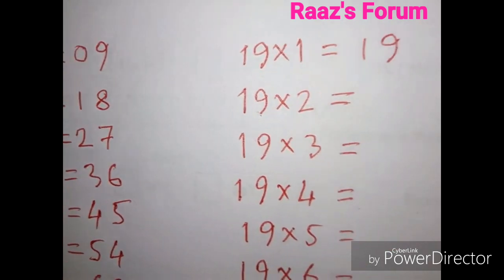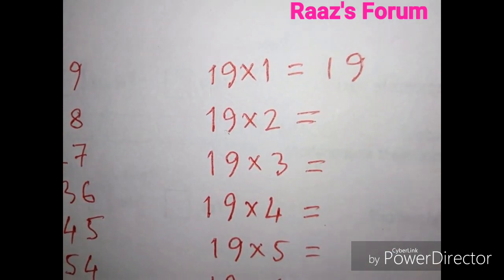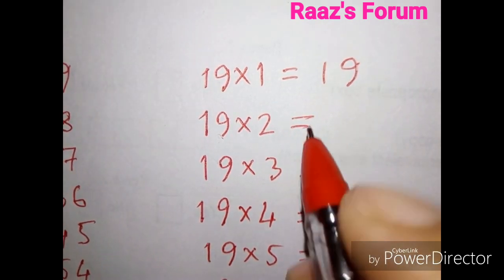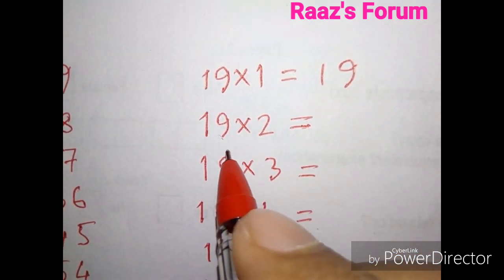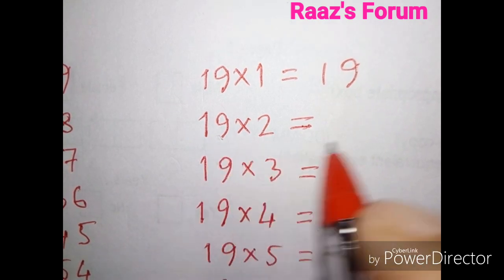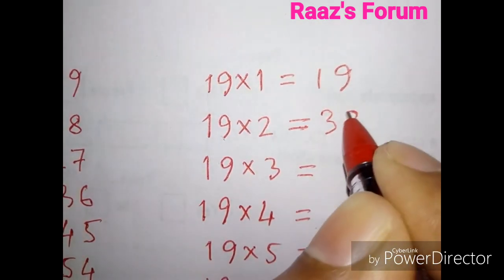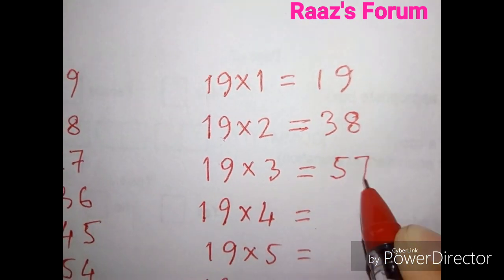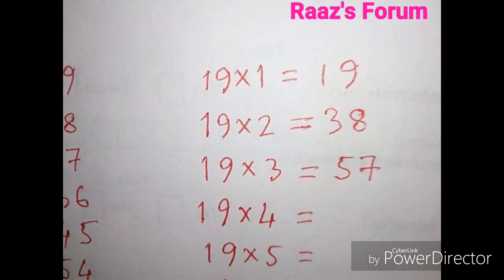Here I have already written 19×1 is 19. You already know, if you know some, that 19×2 is 38. Okay, 19×3 is 57. This much is sufficient for you.